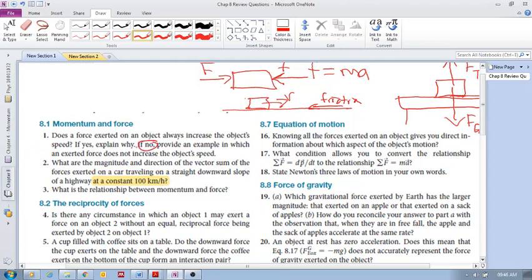What are the magnitude and direction of the vector sum of the forces exerted on a car traveling on a straight downward slope of a highway at a constant 100 kilometers per hour? What is a vector sum of forces? It's the sum of your forces, the sum of the forces, the vector sum of the forces.